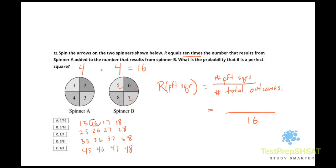16 is a perfect square. 25 is a perfect square. 36 is a perfect square. The next perfect square of 7 is 49, so that's not going to be part of our set. The numerator for our probability calculation is going to be 3 out of 16.